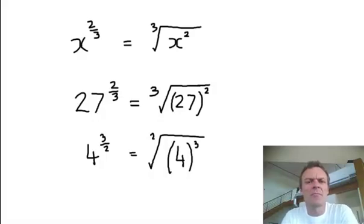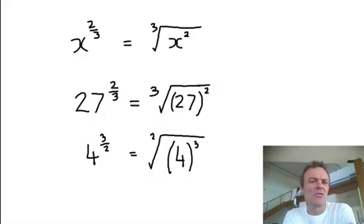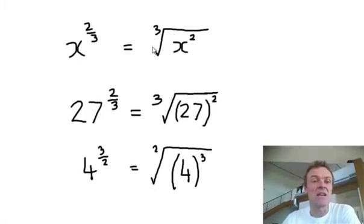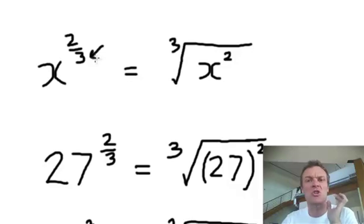Just a quick video on how you can transfer from rational exponents to radical notation. So have a look at this. This x to the power 2 thirds — what it really means is: this x — I'm going to point at both parts of the fraction. The bottom, the denominator, means I want to cube root this x.